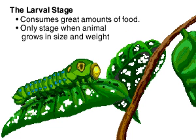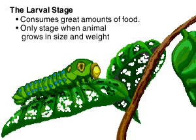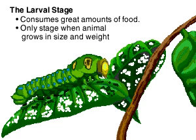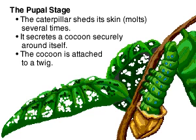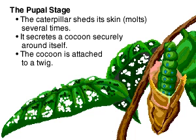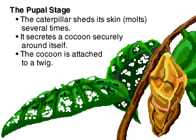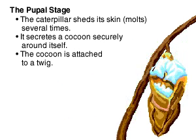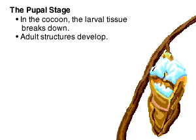After successive moltings, the caterpillar undergoes a metamorphosis to the next stage, the pupal or chrysalis stage. The caterpillar secretes a cocoon around itself, which is attached to a branch or twig. Inside this cocoon, the larval tissue is broken down and new tissue develops to form adult structures, such as wings.